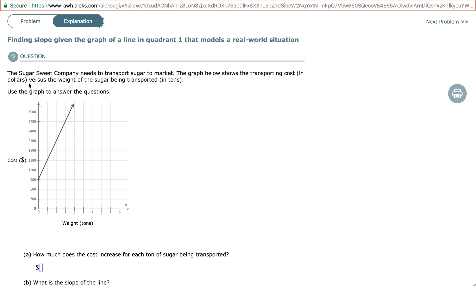Let's start by reading the given problem. The Sugar Sweet Company needs to transport sugar to the market. The graph below shows the transporting cost in dollars versus the weight of sugar being transported in tons.